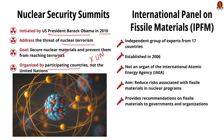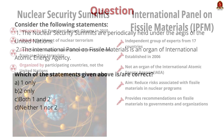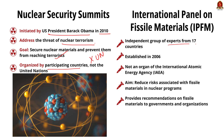Now look at the second statement: the International Panel on Fissile Materials is an organ of the International Atomic Energy Agency. This panel is an independent group of experts from 17 countries and is not an organ of the IAEA. The International Panel on Fissile Materials was established in 2006 with the aim of reducing the risk associated with the use of fissile materials in nuclear weapons and nuclear power programs. It provides technical and policy recommendations to governments, international organizations and civil society. So the correct answer is option D — neither one nor two.